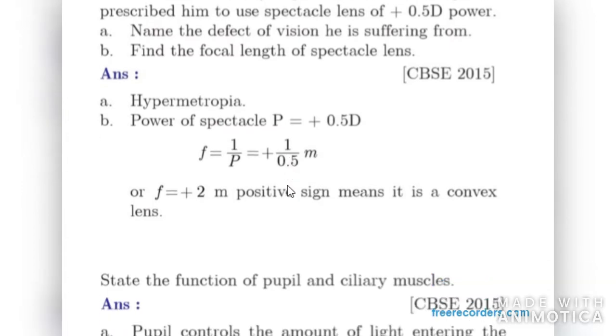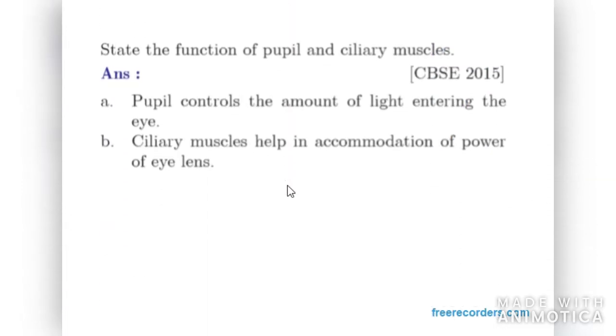Moving on to next. It says state the function of pupil and ciliary muscles. Pupil basically helps in controlling the amount of light entering through the eye, and ciliary muscles help in accommodation of power of eye lens.